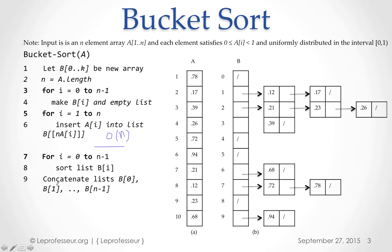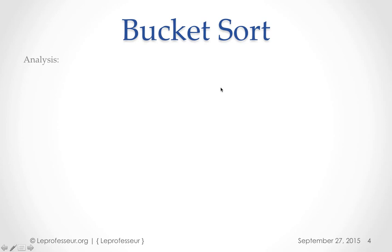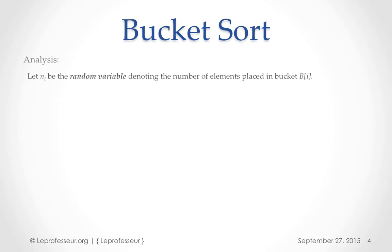Worst case is O(n²), like if every number is unsorted and you use insertion sort. But remember, we have input uniformly distributed by a random process, so we make use of that randomness. Our time complexity analysis will be different — we use expectation, and we'll be talking about expected time.